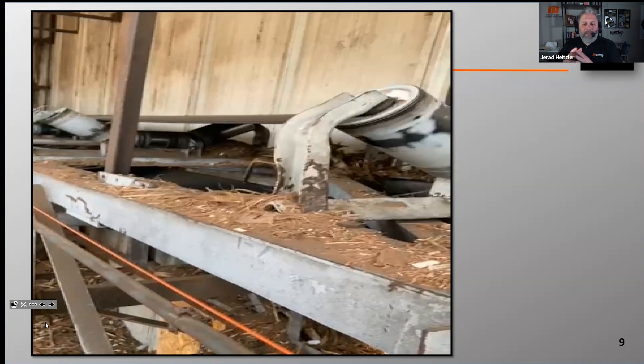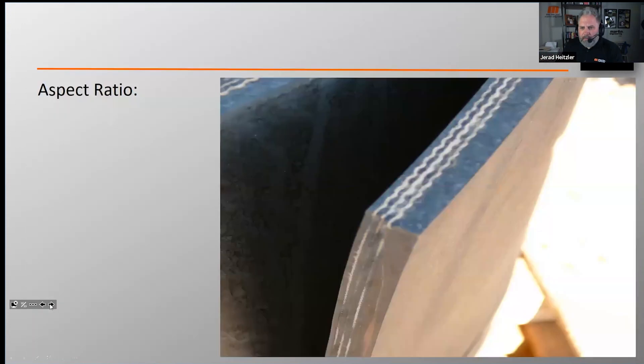Those idlers need to be square. They need to be aligned, and that's what causes the belt to track properly. If the belt's not sitting in that trough, then those troughs, those idlers don't have any influence on the belt, and that's going to cause it to be affected by other forces which will cause it to mistrack.